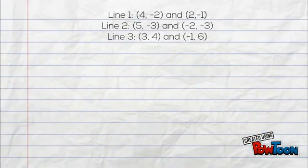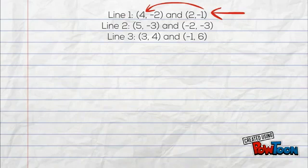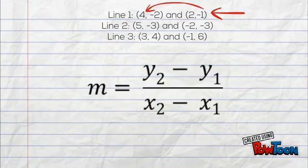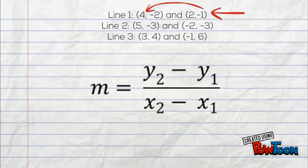Here we have three lines, and they each have two points. So what we're going to do is we're going to use the slope formula to find the slope of each of the lines.